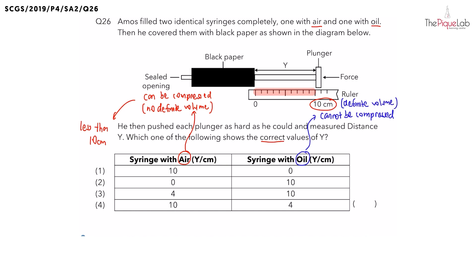Now since the oil cannot be compressed and the plunger cannot be pushed in, what will happen to distance y? Does distance y increase, decrease or remain the same? Yes, distance y would remain the same. And remember, what was the original length of y? Y is 10 cm. So this tells us, for the syringe filled with oil, that distance y remains at 10 cm.